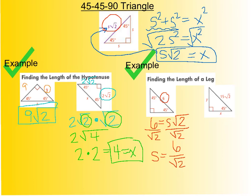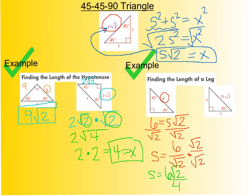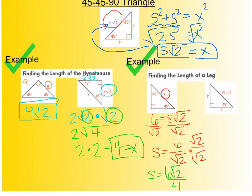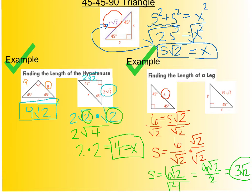However, I can't leave my answer with a radical in the denominator, so I need to rationalize. I multiply by radical 2 over radical 2. That gives me S equals 6 radical 2 over radical 4. Since radical 4 equals 2, I have 6 radical 2 over 2. Simplifying, 6 divided by 2 is 3, so S equals 3 radical 2. That's the answer for finding the leg length.